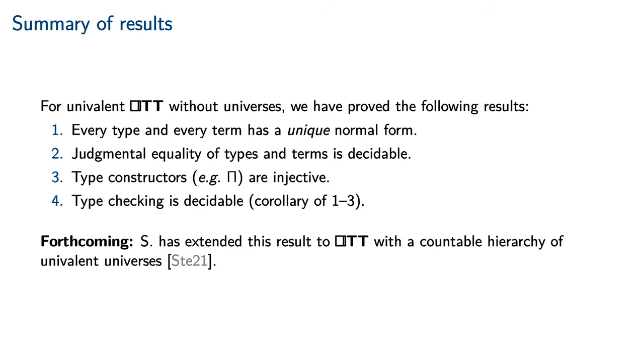In this paper, we proved for univalent cubical type theory without universes the following results. Every type and every term has a unique normal form. Hence, judgmental equality of types and terms is decidable. Furthermore, type constructors such as pi and sigma are injective. A corollary of the foregoing results is that type checking is decidable. In subsequent work, Stirling has extended this result to cubical type theory with a countable hierarchy of univalent universes. Thank you for your interest and attention.